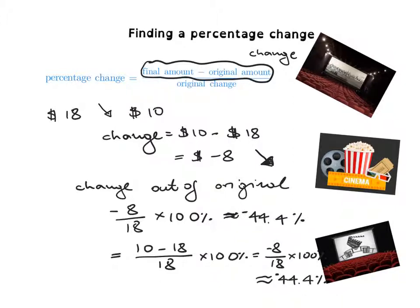When we get negative 44.4%, it means the value has decreased. Therefore, the price of the ticket has decreased by approximately 44.4%. I hope you enjoyed watching this — thank you for watching and see you next time, bye!